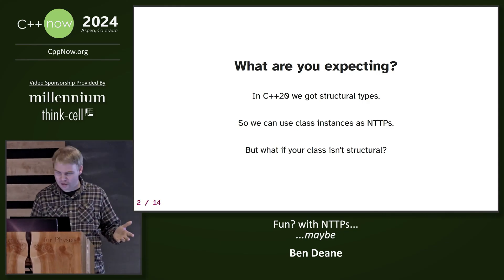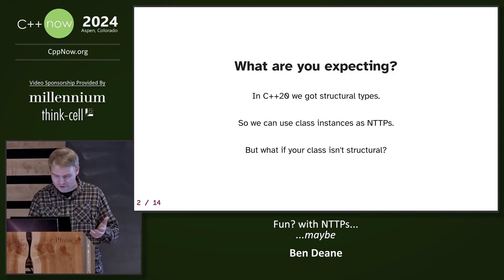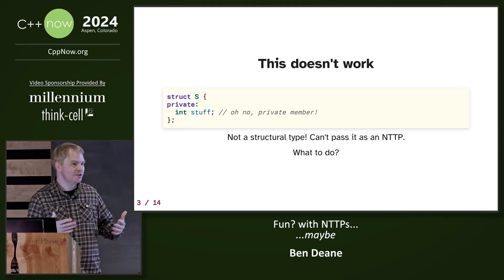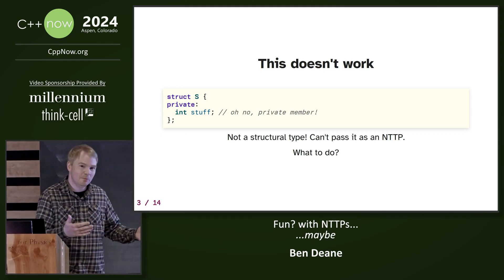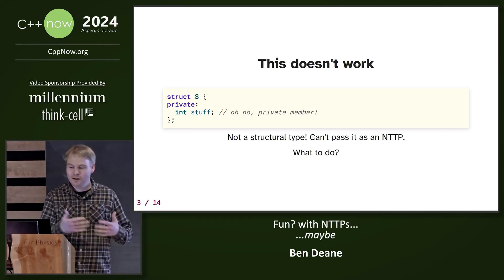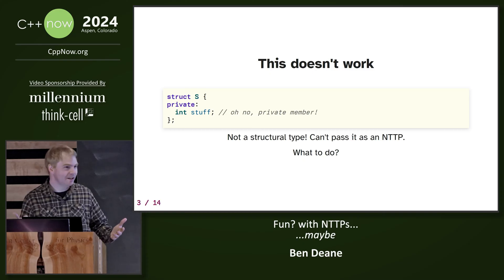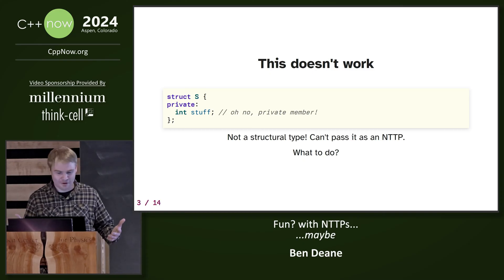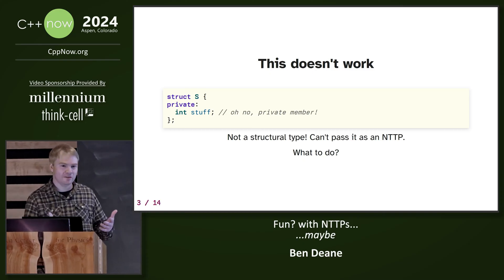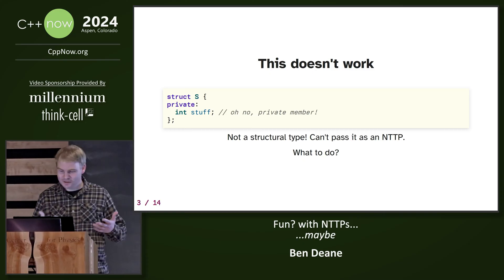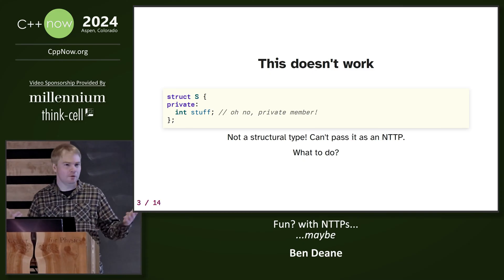But what if your class isn't structural? You want to hide some stuff, and as soon as you have private members, for instance, you're suddenly not structural. You can't pass this as an NTTP. So what can you do?